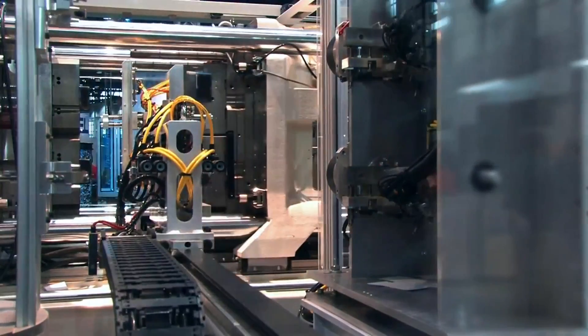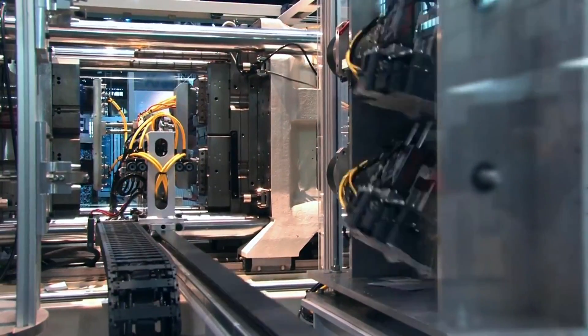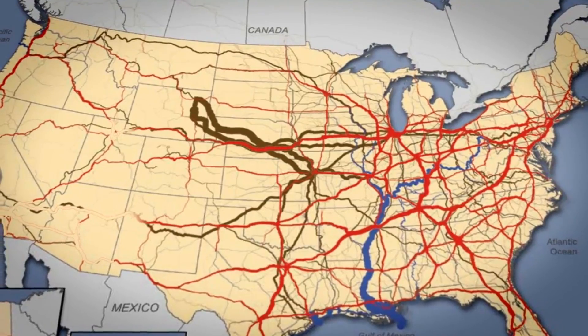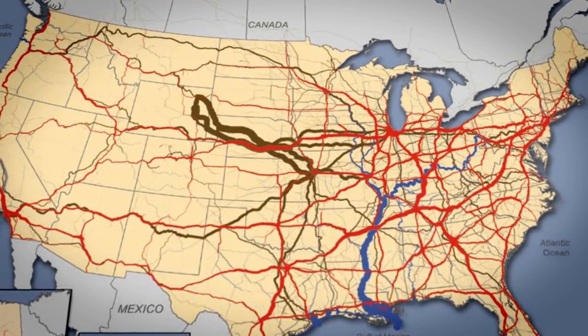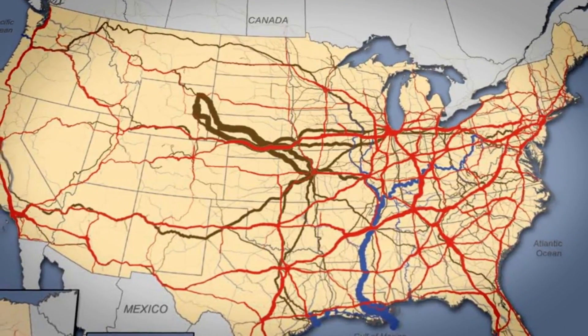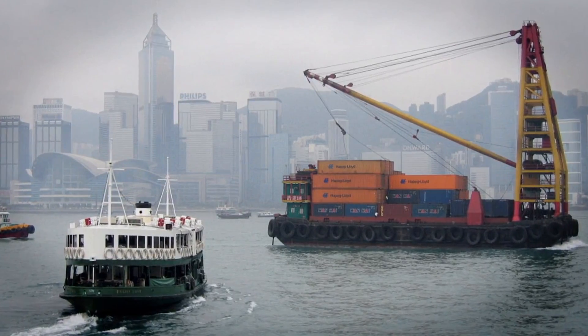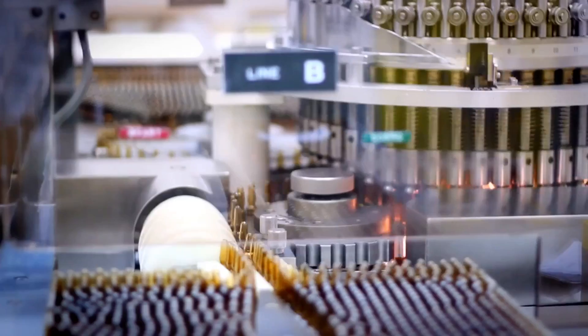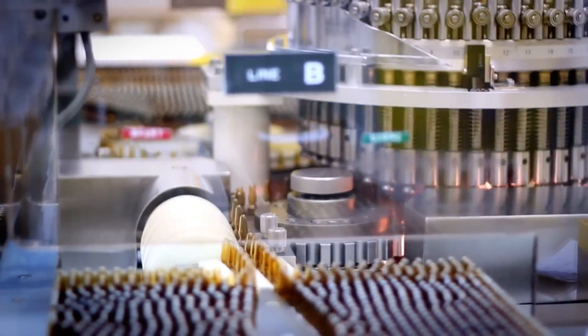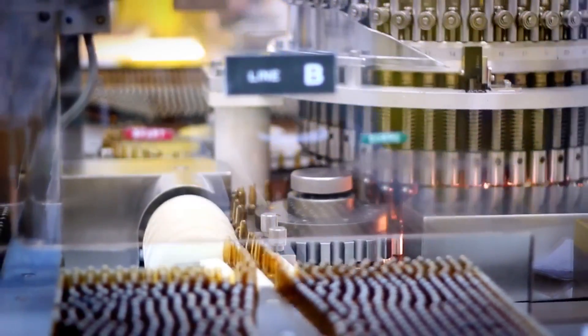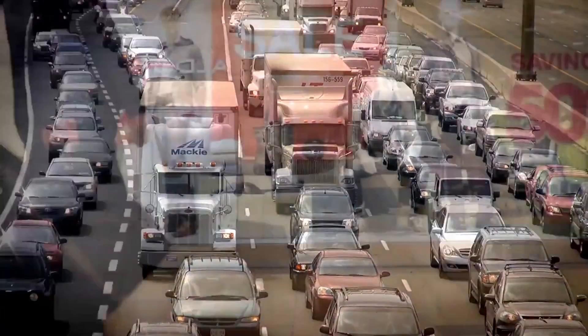So what is logistics and supply chain management? Basically, it's the art and science of getting products from where they were made to where you, the consumer, want them to be. Firms have become more global in terms of where they source materials, where they manufacture those products, and where they sell their finished goods.